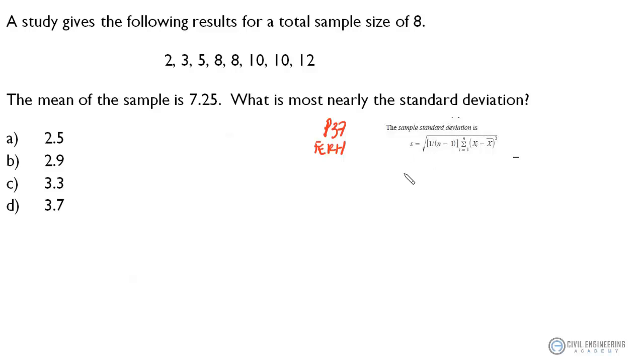And it says that the standard deviation is 1 over the number of samples minus 1 times the summation of each individual sample value minus the sample mean squared, and all of that take the square root.